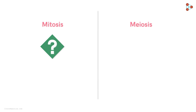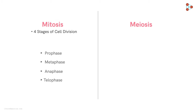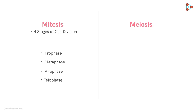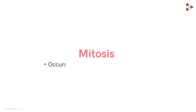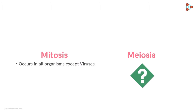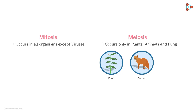Moving to the next difference: mitosis has four stages of division, while meiosis — since it involves two rounds of division, meiosis 1 and meiosis 2 — has a total of eight stages of division. Additionally, mitosis occurs in all organisms except viruses, while meiosis occurs only in plants, animals, and fungi.